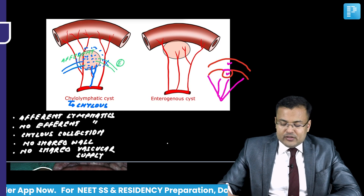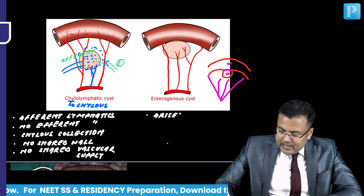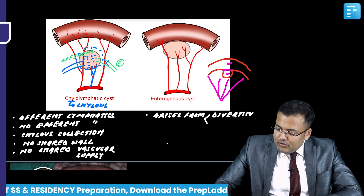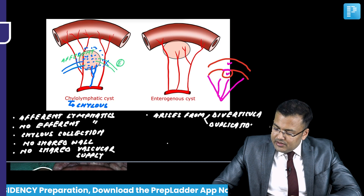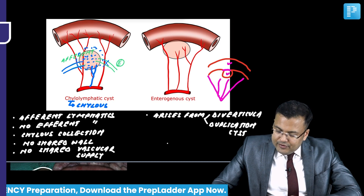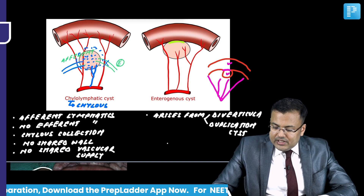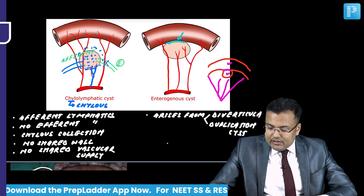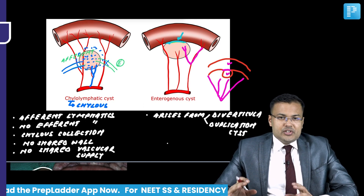Enterogenous cyst arises from diverticula or duplication cyst - when the diverticula is walled off, it is known as duplication cyst. If you see this image carefully, you will notice there is a shared wall and shared vascular supply.